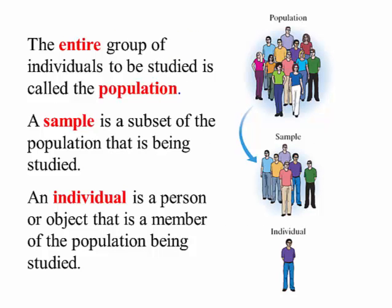Lesson objective number two. We'll start with some definitions. Population is the entire group of individuals to be studied. A sample is a subset or part of the population being studied. An individual is a person or object that is a member of the population being studied. So the smallest is an individual; a group of individuals make a sample, and a sample is part of a population. The best type of sample is one that is representative of the population.